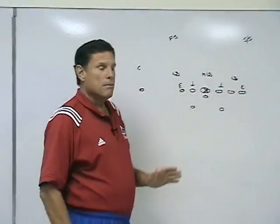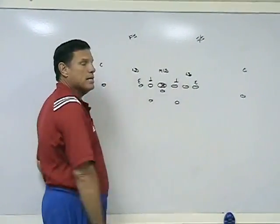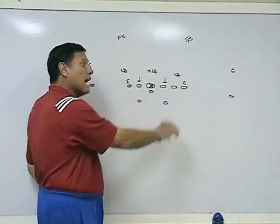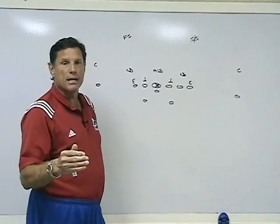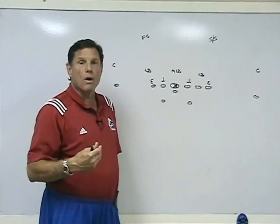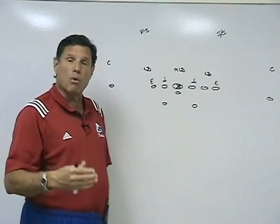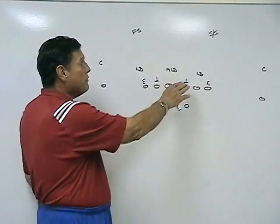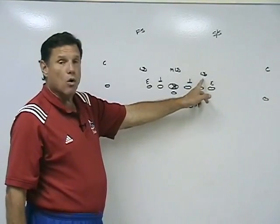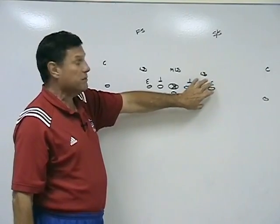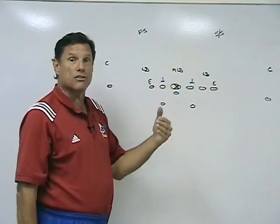If you look at the 4-3, the difficulty in the traditional Bear package is that there is no man to read on the outside shoulder of the tackle — he is off the line of scrimmage. So one of our rules is that we never try to read the bubble area. In our particular option, because it is a triple option and because we teach our quarterback to read, it is important that we maintain that same philosophy. So if we're going to face a 4-3 defense, the quarterback needs to know that we're never going to read the bubble.